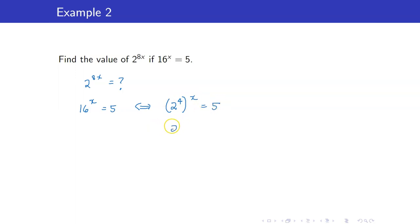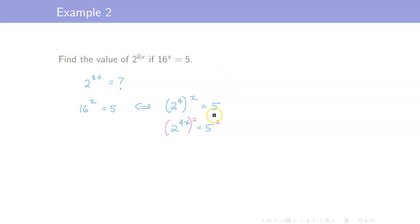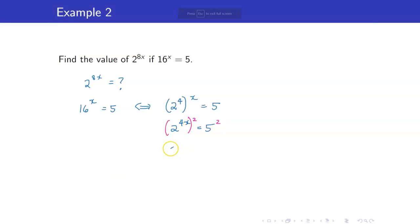This is 2^(4x). But remember that our goal is 2^(8x). How can we achieve 2^(8x) from 2^(4x)? We can achieve that by taking the square of both sides. That's (2^(4x))^2 is now 2^(8x), and 5^2 equals 25. That is the answer.